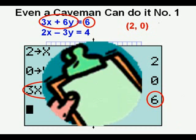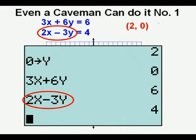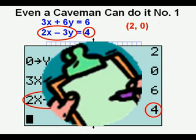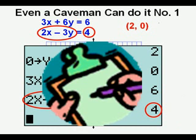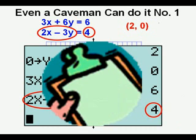Now we check the other equation by entering 2x - 3y to see if we get 4 as an answer. We do. Check. Og is right again.